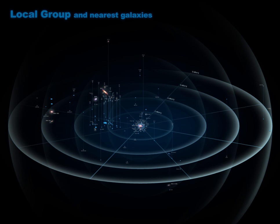The three largest members of the group are the Andromeda galaxy, the Milky Way and the Triangulum galaxy. The larger two of these spiral galaxies each have their own system of satellite galaxies.